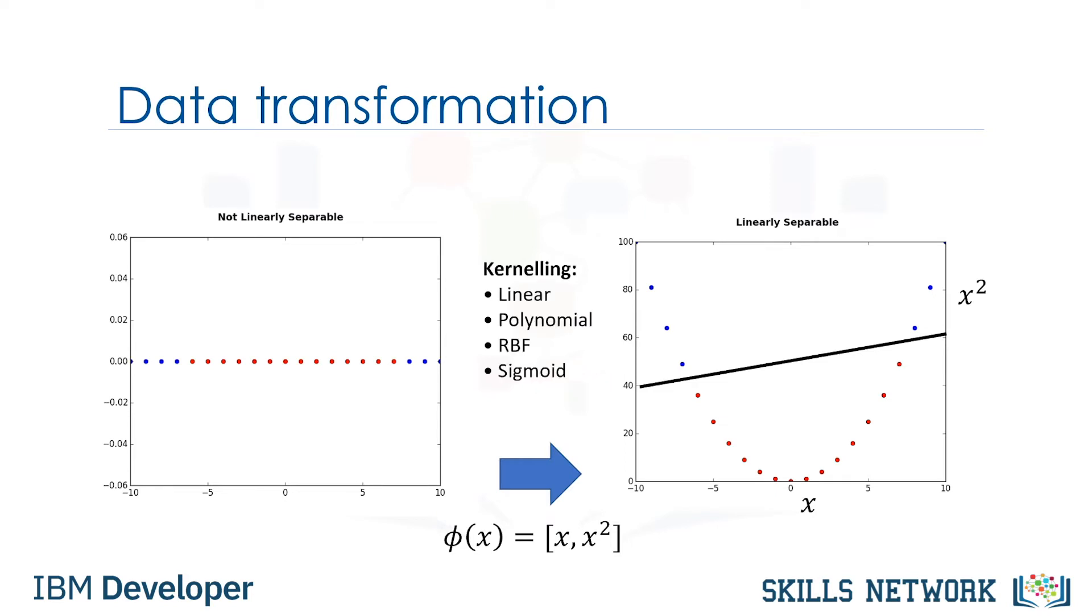Basically, mapping data into a higher dimensional space is called kerneling. The mathematical function used for the transformation is known as the kernel function and can be of different types, such as linear, polynomial, radial basis function, or RBF, and sigmoid. Each of these functions has its own characteristics, its pros and cons, and its equation.